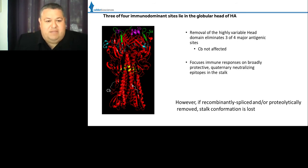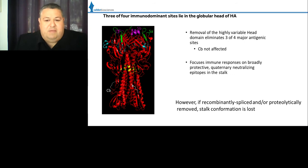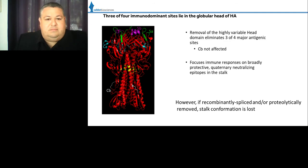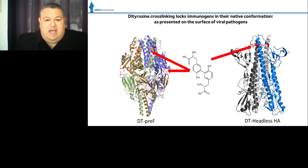The idea of a headless HA molecule is to present the immune system with the less immunogenic stalk domain, given that it's primarily conserved year to year, and elimination of the head would allow focusing immune responses on the stalk domain, which presents neutralizing epitopes. However, attempts to recombinantly splice or proteolytically remove the head domain have resulted in a loss of stalk conformation. Calder's approach is to apply the additional stability that a dityrosine crosslink imparts to lock in specific conformations and generate the most potent conformationally intact immunogens.